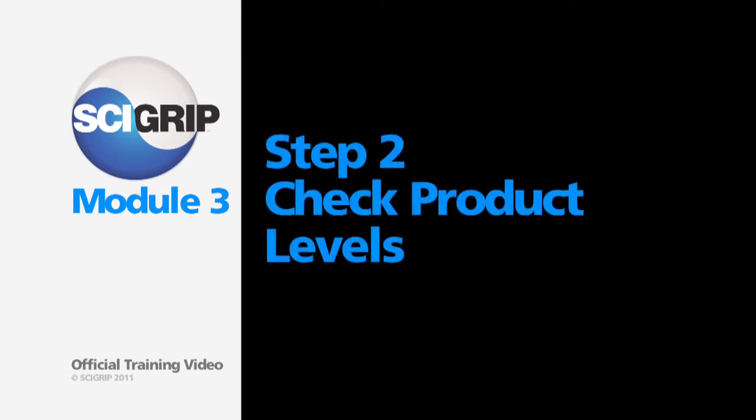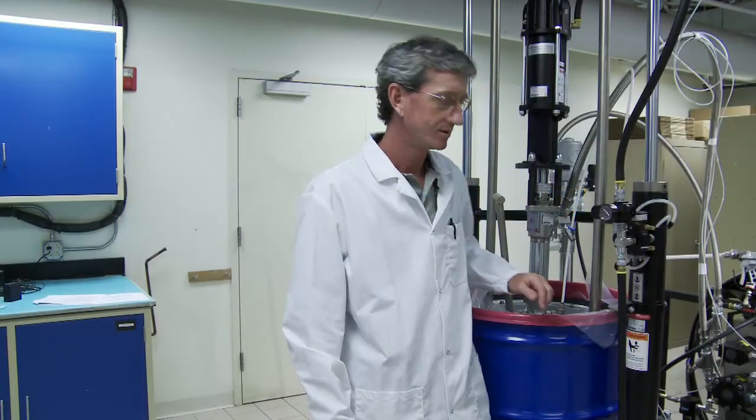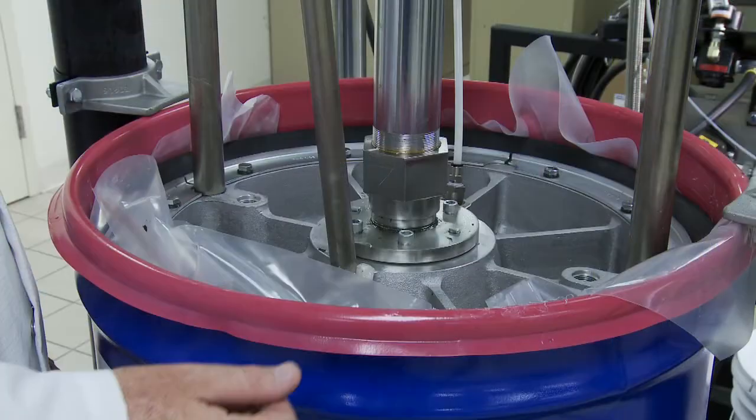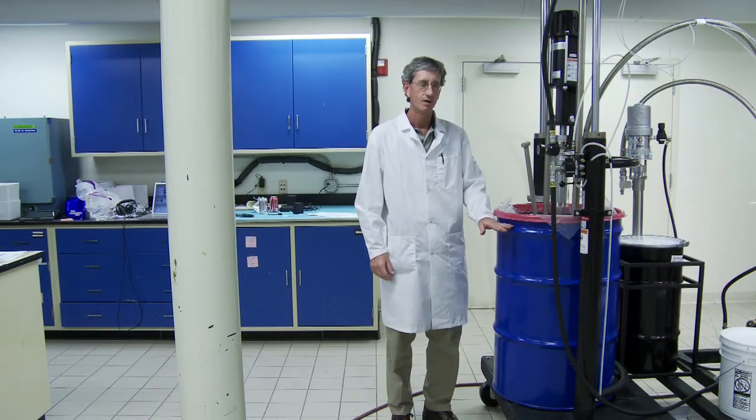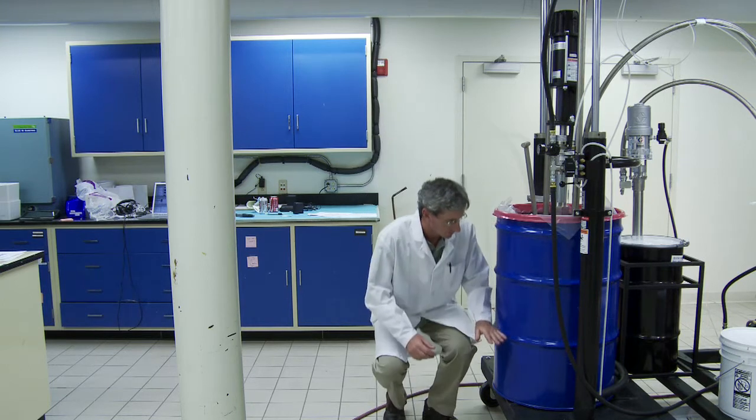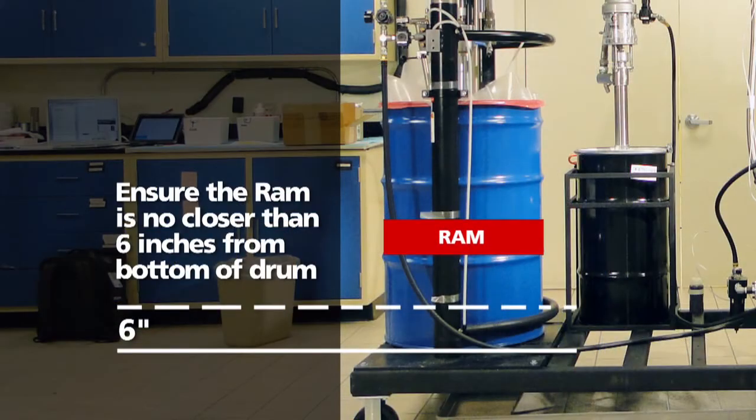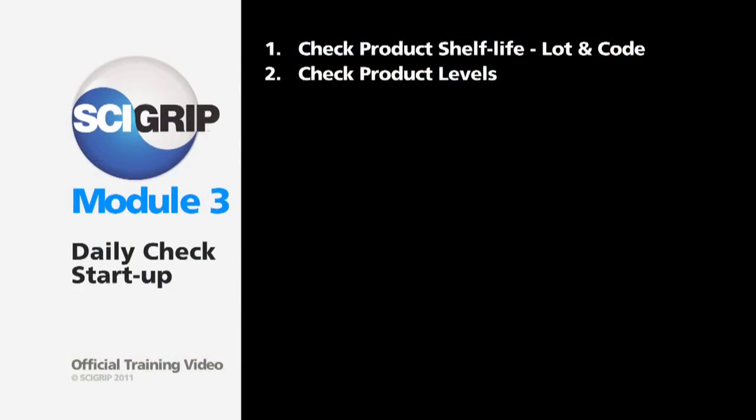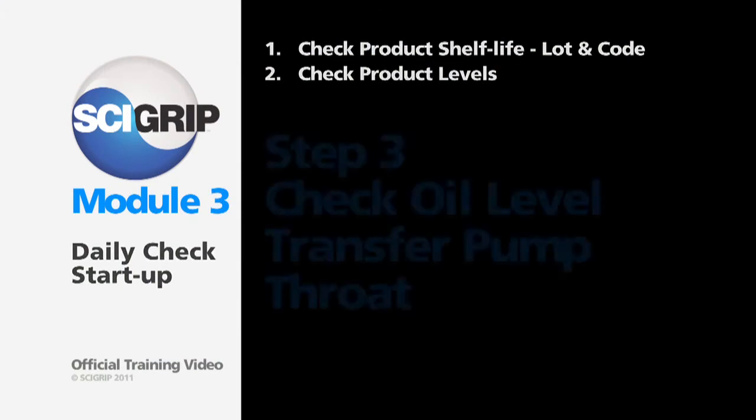Step number two is to check the product level. The ram is approximately six inches thick, so you'll simply look down inside the drum. This drum is full, however as you use more material and the ram head gets lower, you'll have to measure to make sure that the top of the ram plate is at least six inches from the bottom of the drum. When the drum is closer to being empty, you may need to use a tape measure to make sure you have enough material to do the job.